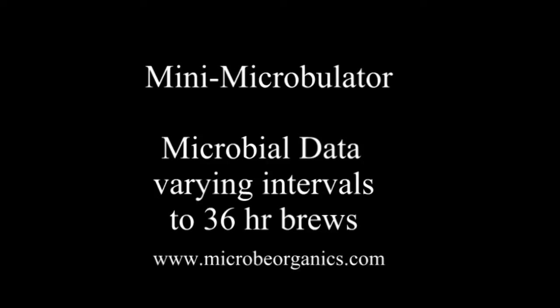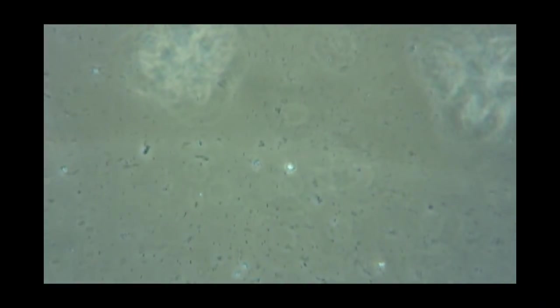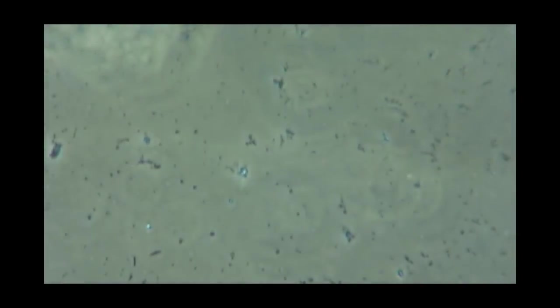Here we'll have a look at some shots of the microorganisms that were extracted and multiplied in the mini-microbulator, the five-gallon unit made for use with a Home Depot five-gallon pail or facsimile.